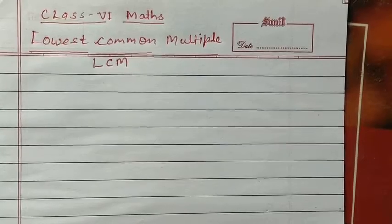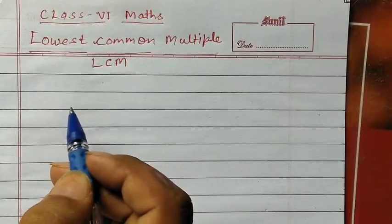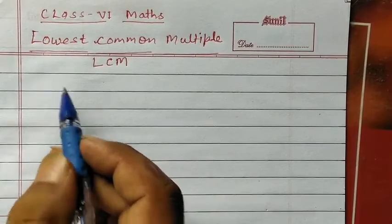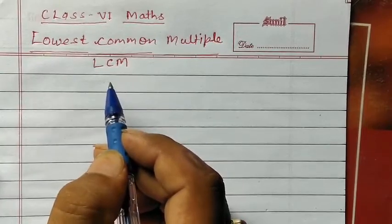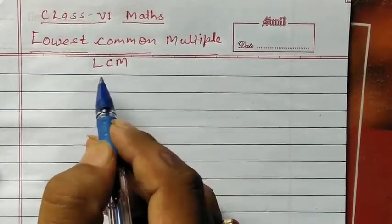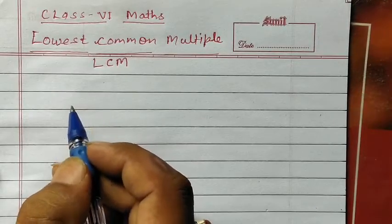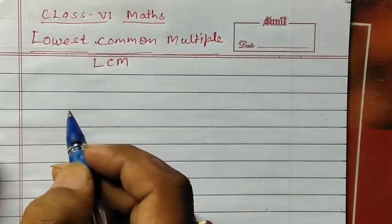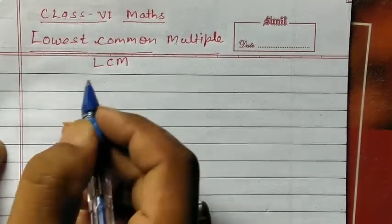Hello students, welcome to my YouTube channel DS Thapa. Today we will discuss about Lowest Common Multiple. Lowest Common Multiple means LCM. In this topic we will discuss how to find the LCM of two and more numbers.